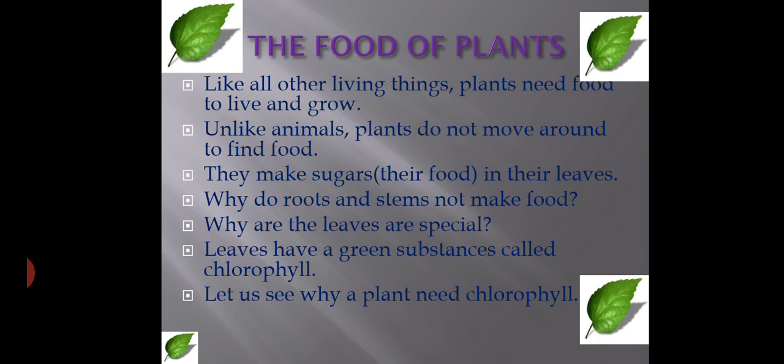Unlike animals, plants do not move around to find food. Animals move to search for food, but plants do not. Plants make sugars — their own food — in the leaves, where chloroplasts are present, through photosynthesis. Roots and stems do not make food because chlorophyll is absent in them.